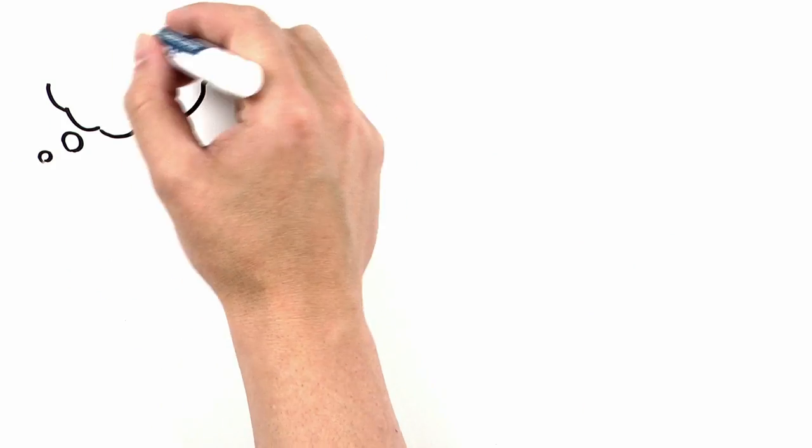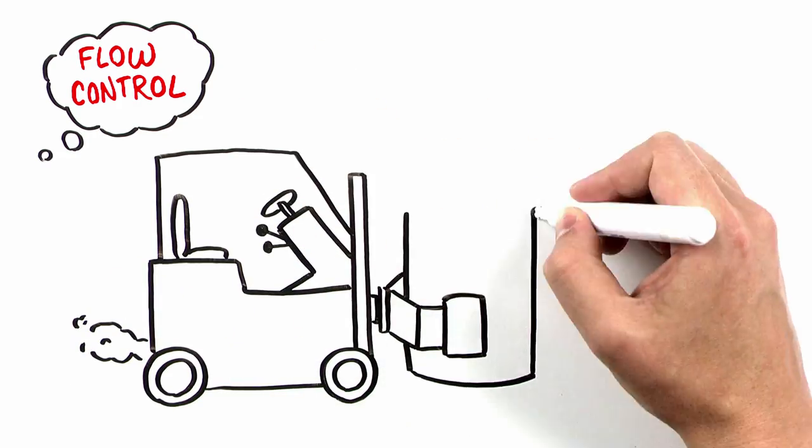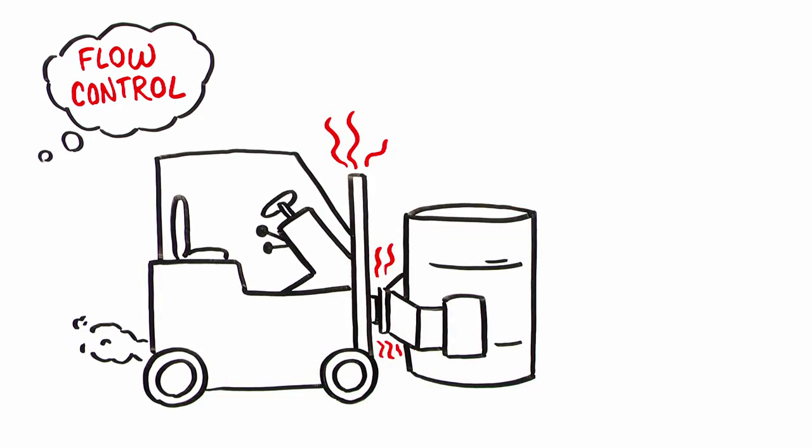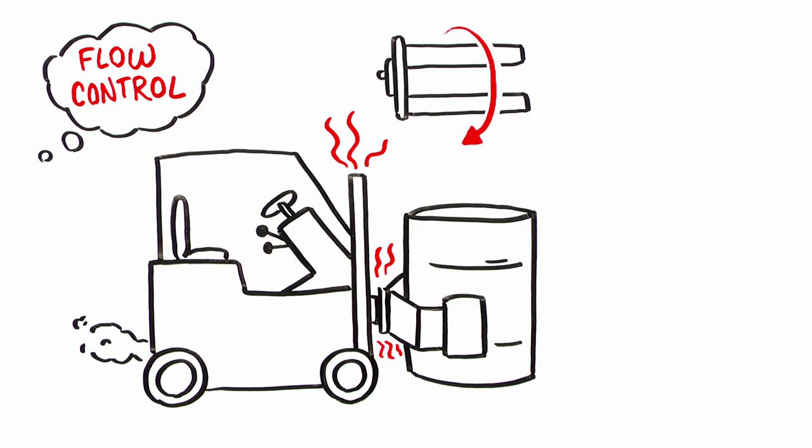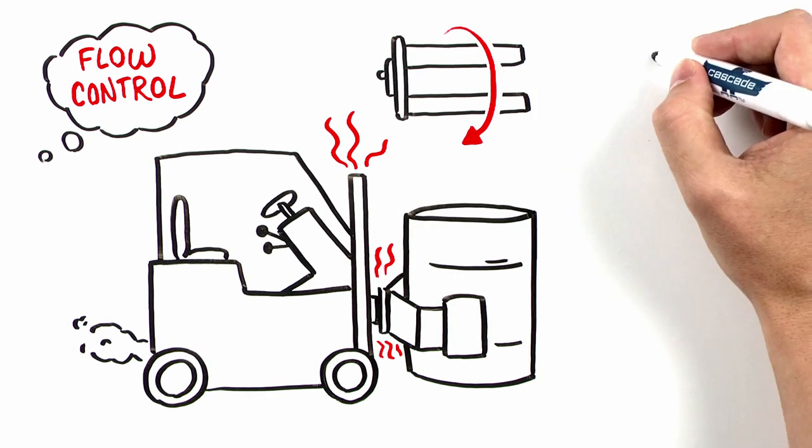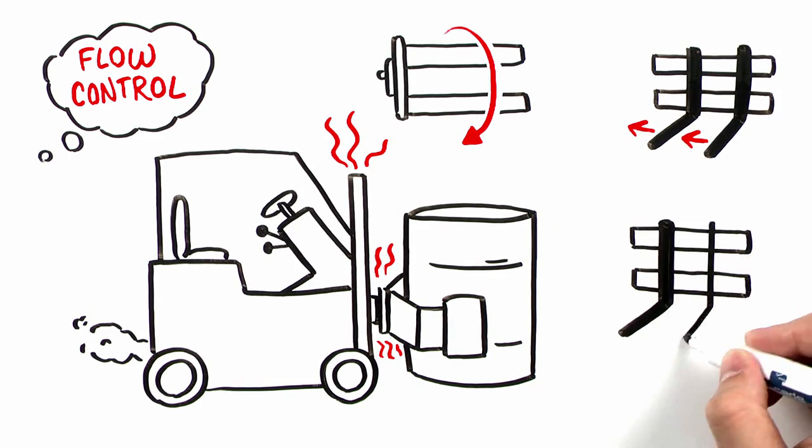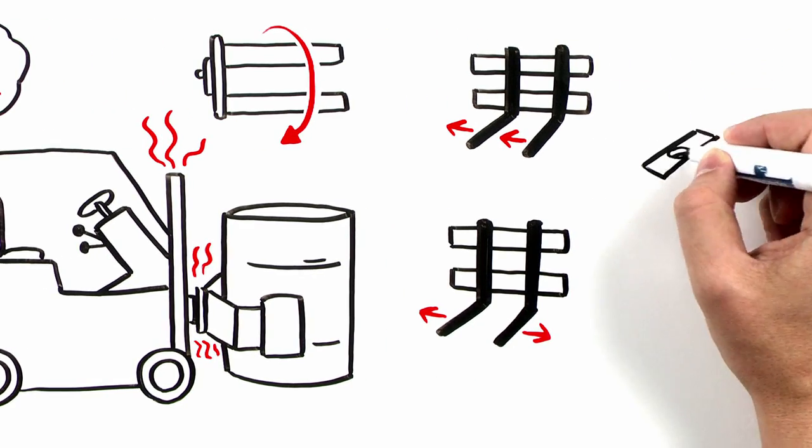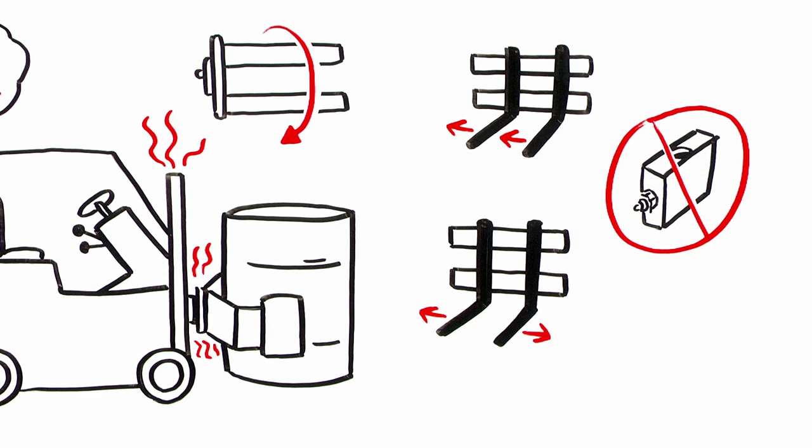Lastly, when evaluating the potential need for flow control, don't forget about the third area to consider, the application's demand on the attachment. Unlike rotators and paper roll clamps, which are typically used in high-cycle applications, low-flow demand attachments, such as side shifters and fork positioners, typically aren't candidates for flow regulation accessories due to their short, infrequent movements.